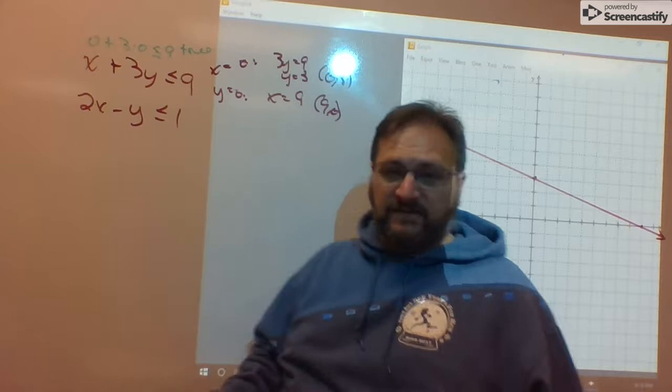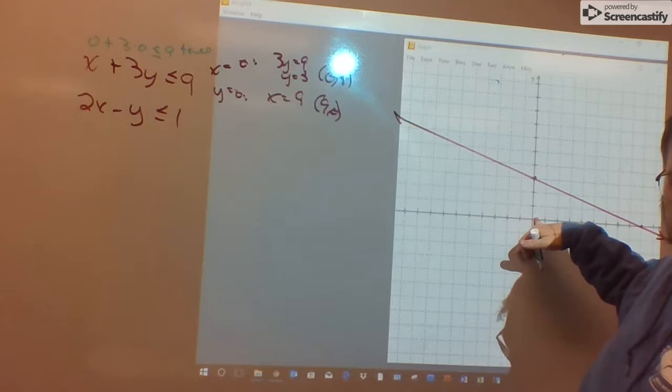So I need to shade where my test point is. Here's my test point. It's below and to the left of the line. Shade below and to the left of the line. Not yet.